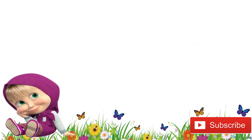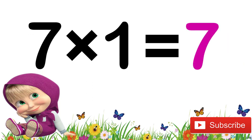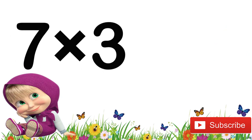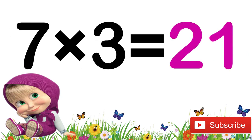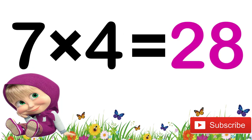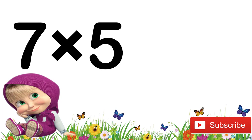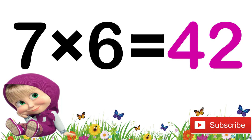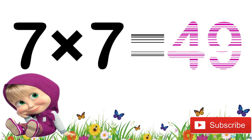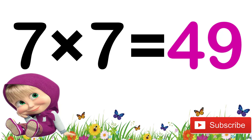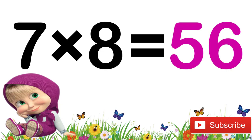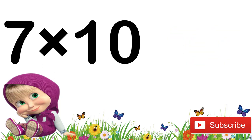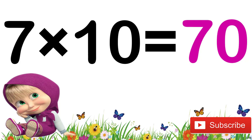Now let's revise again children. 7 ones are 7. 7 twos are 14. 7 threes are 21. 7 fours are 28. 7 fives are 35. 7 sixes are 42. 7 sevens are 49. 7 eights are 56.